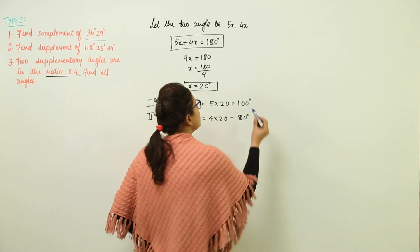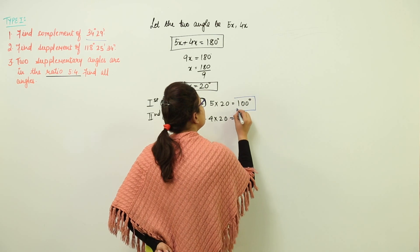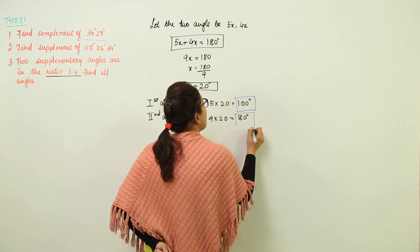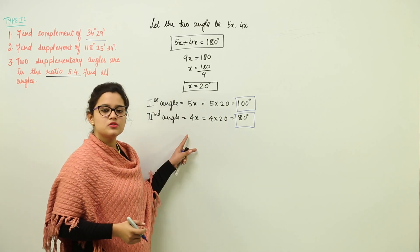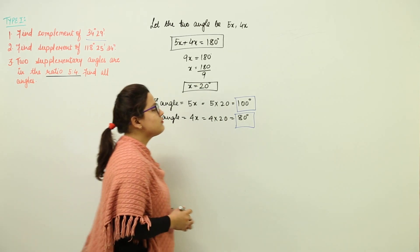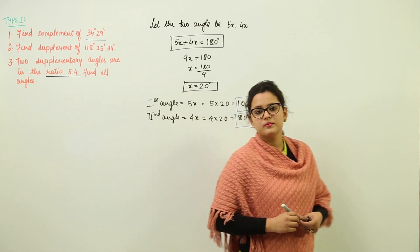Now you can even cross-check your answer on your own. That is, you can add up these two angles and check whether they give you 180 degrees or not. 100 plus 80 add up to 180. That means these two angles are supplementary. That means we have found the answer correct.